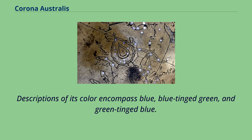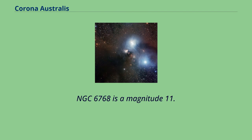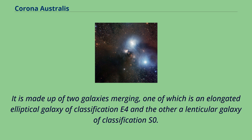Corona Australis' location near the Milky Way means that galaxies are uncommonly seen. NGC 6768 is a magnitude 11.2 object 35 arcminutes south of IC 1297. It is made up of two galaxies merging, one of which is an elongated elliptical galaxy of classification E4 and the other a lenticular galaxy of classification S0.